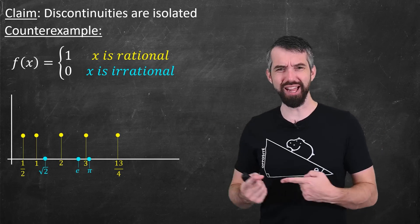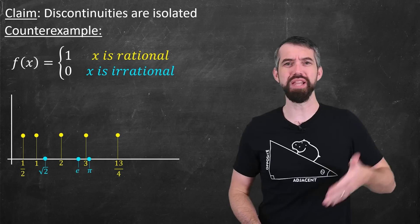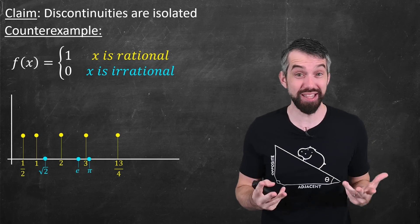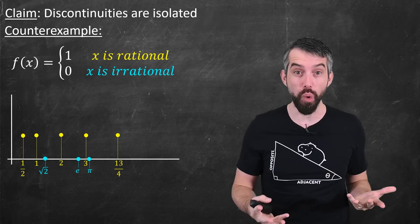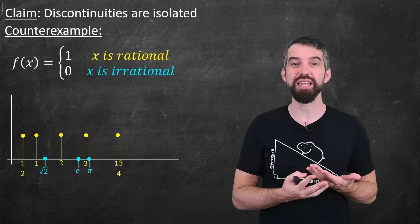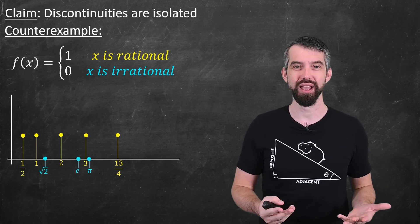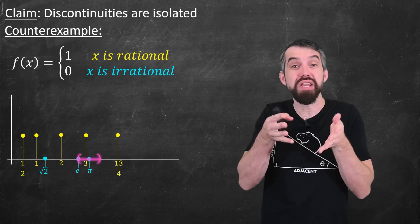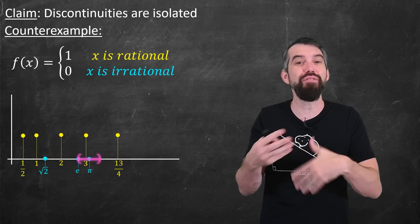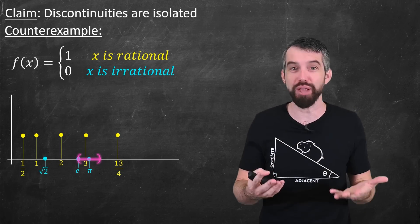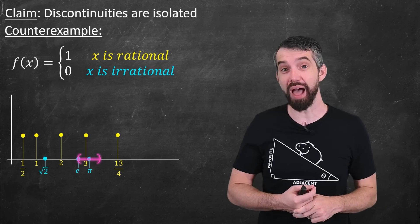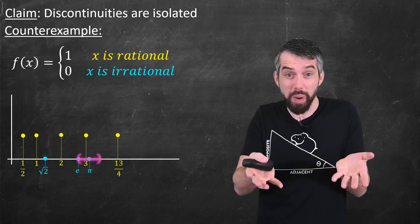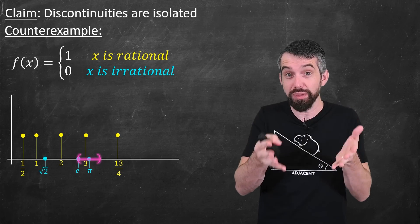So this function is kind of like a comb — it goes up and down between 1 and 0 all over the place. The result is that this function is continuous nowhere; it is discontinuous over the entire real line. The basic notion of continuity is that I can zoom in enough on the domain such that everything on the domain is as close as I wish to the limiting value. So if I zoom in around, say, the value π — an irrational number — I look at some little interval.